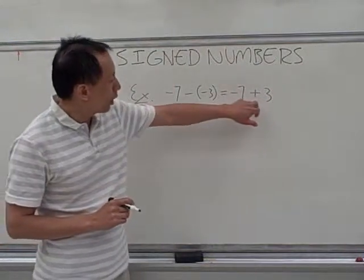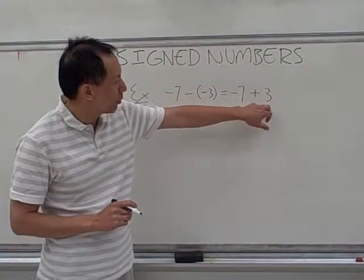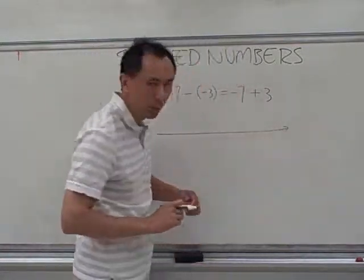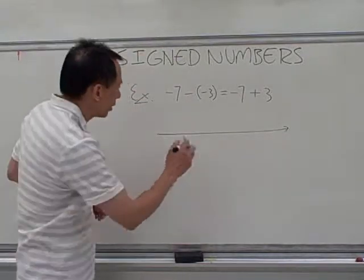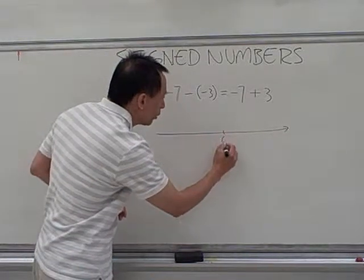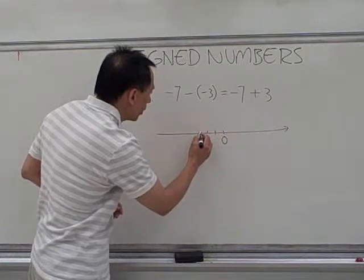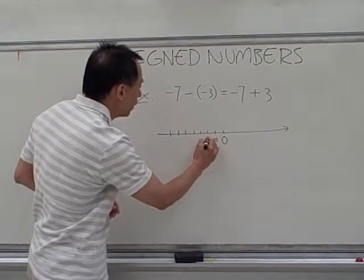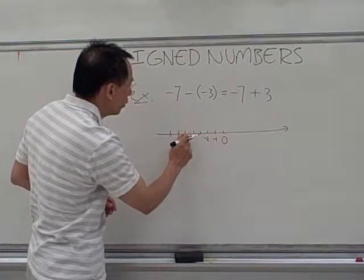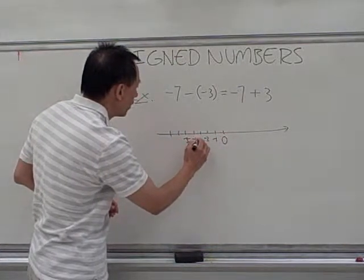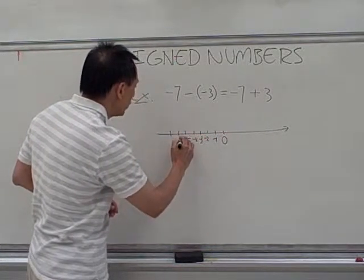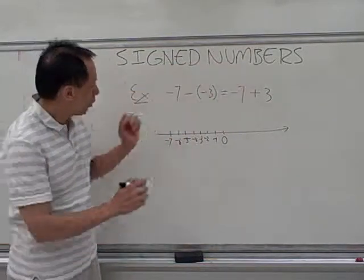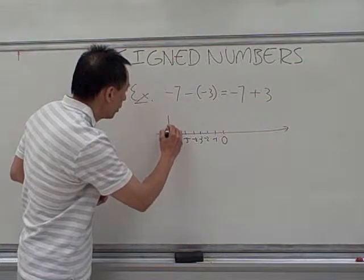When we can make that change, realizing that this is a plus positive 3, we can now go to the real number line as we have done before and do some counting. So once again, the center is a 0. I'm going to mark the negative numbers on the left-hand side. It's negative 1, negative 2, 3, 4, 5. And this is negative 6 and this is negative 7. Negative 7 is our starting point. That's the first number.